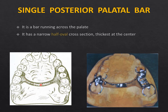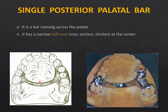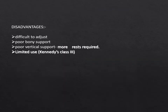The single palatal bar is the simplest design — just a bar running across the palate at a right angle to the mid-palatal raphae, lying in the posterior part of the hard palate. In cross-section it is half-oval: flat underneath and gently sloping on the superior surface toward the edges. It is not the most favorable major connector and is used mainly in tooth-supported situations like Kennedy's Class 3. Disadvantages: difficult to adjust, poor bony support due to small surface area, poor vertical support requiring more rests on adjacent abutment teeth.